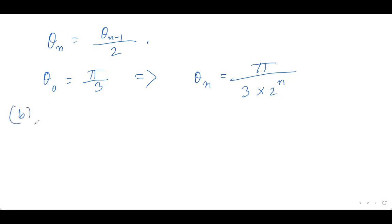So part b is, we have to figure out limit n tends to infinity, 4 to the power n, 1 minus a_n.